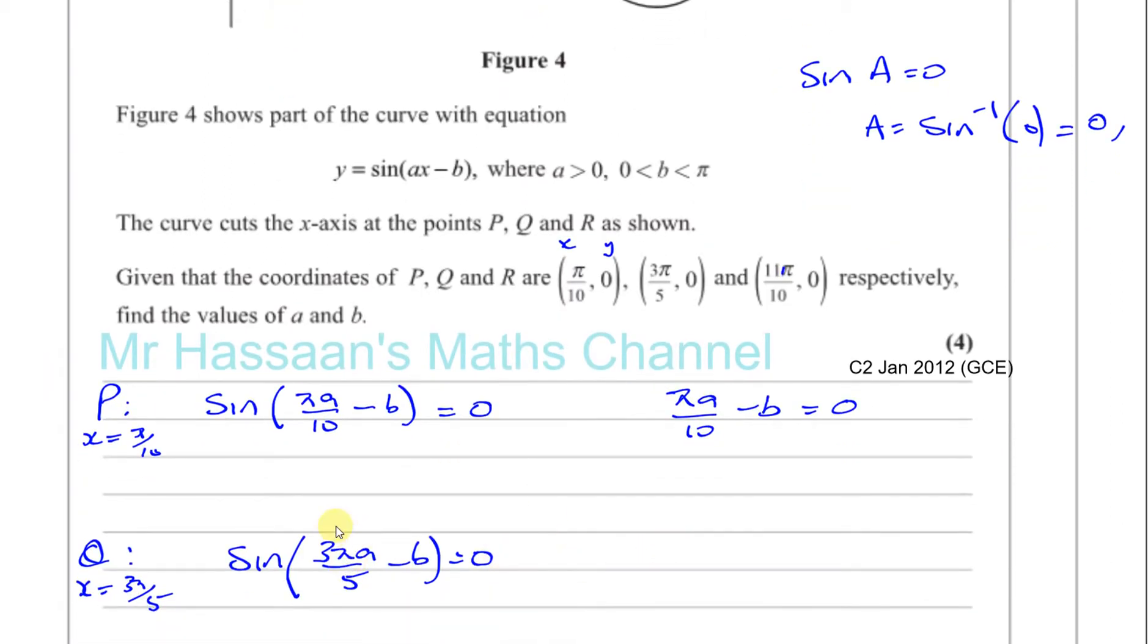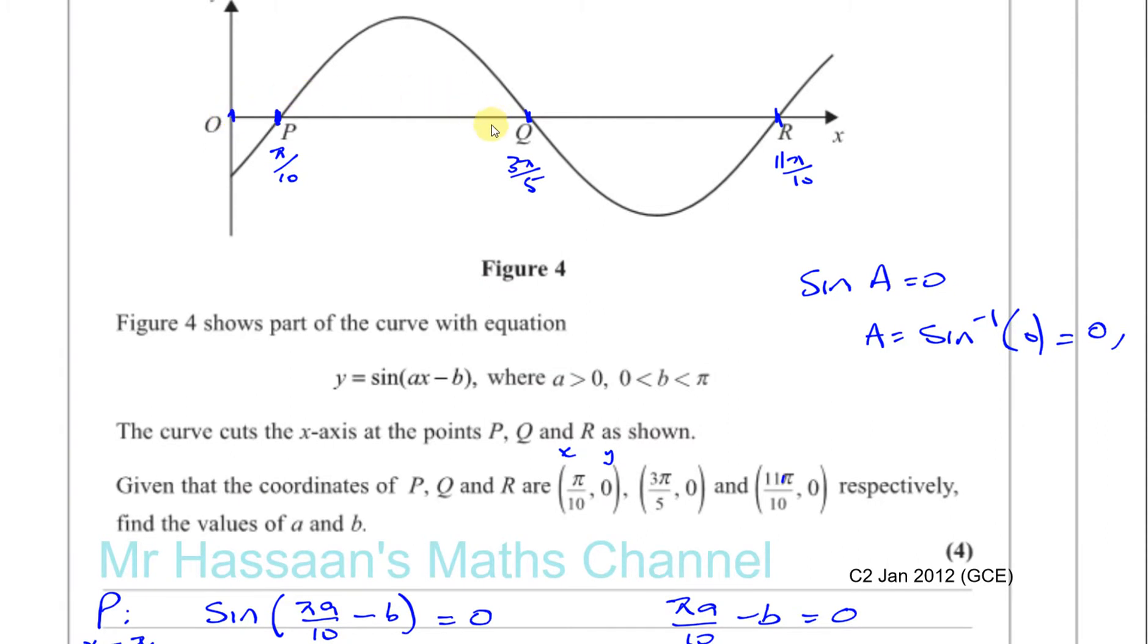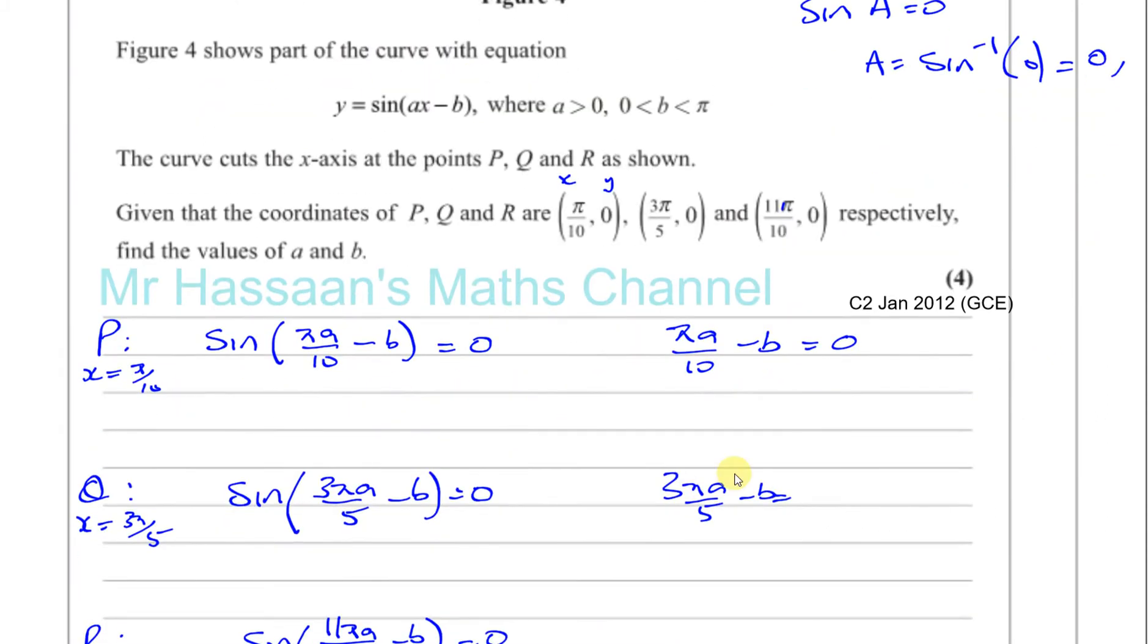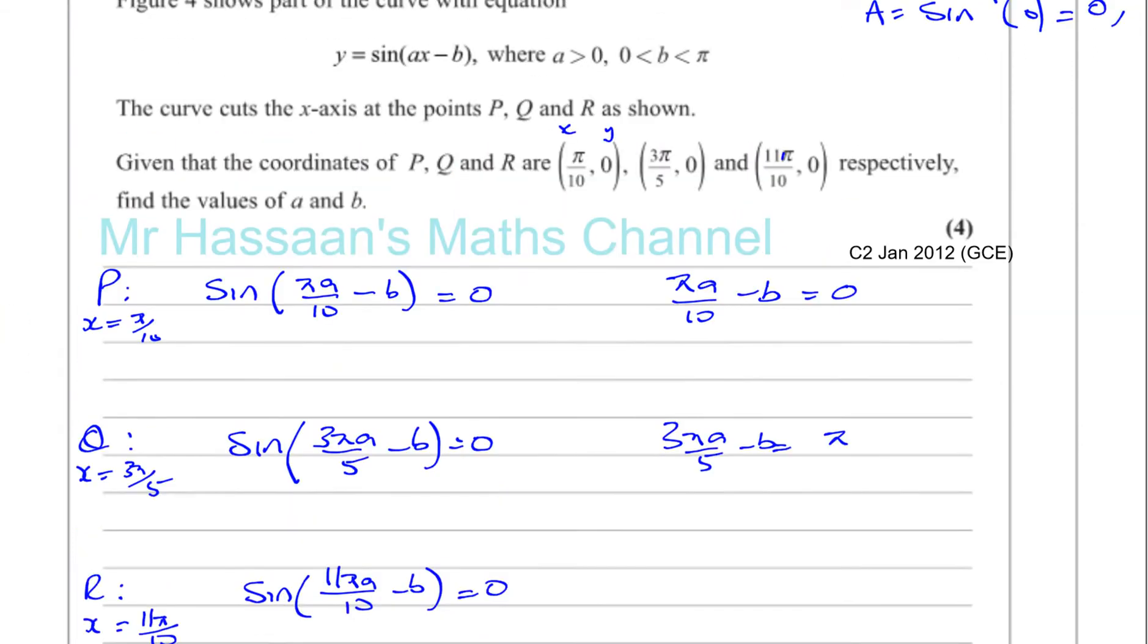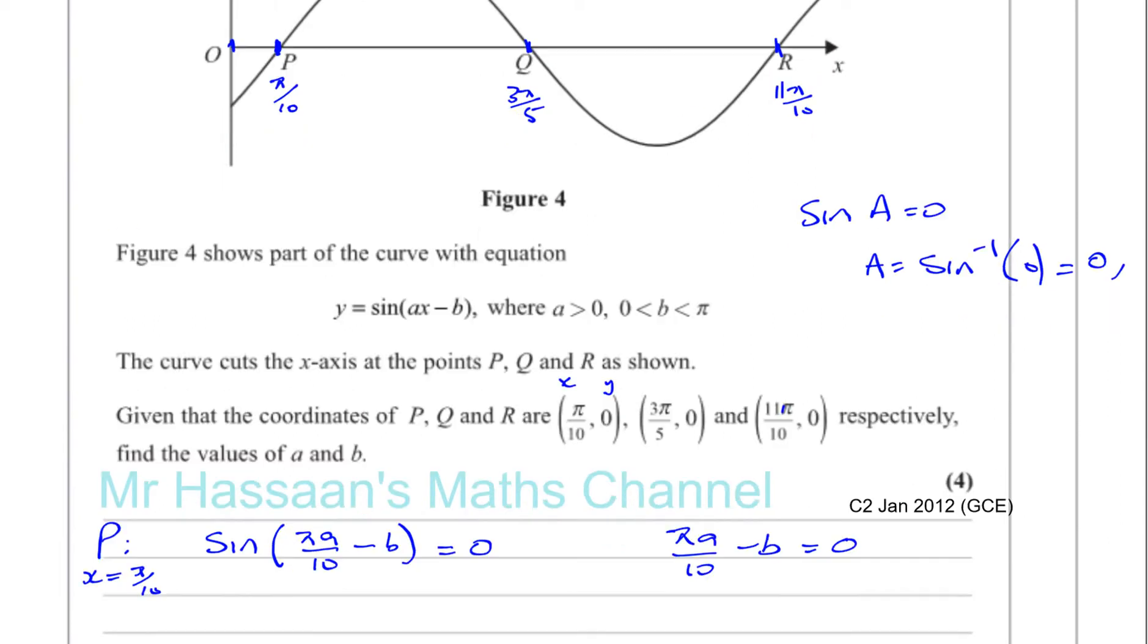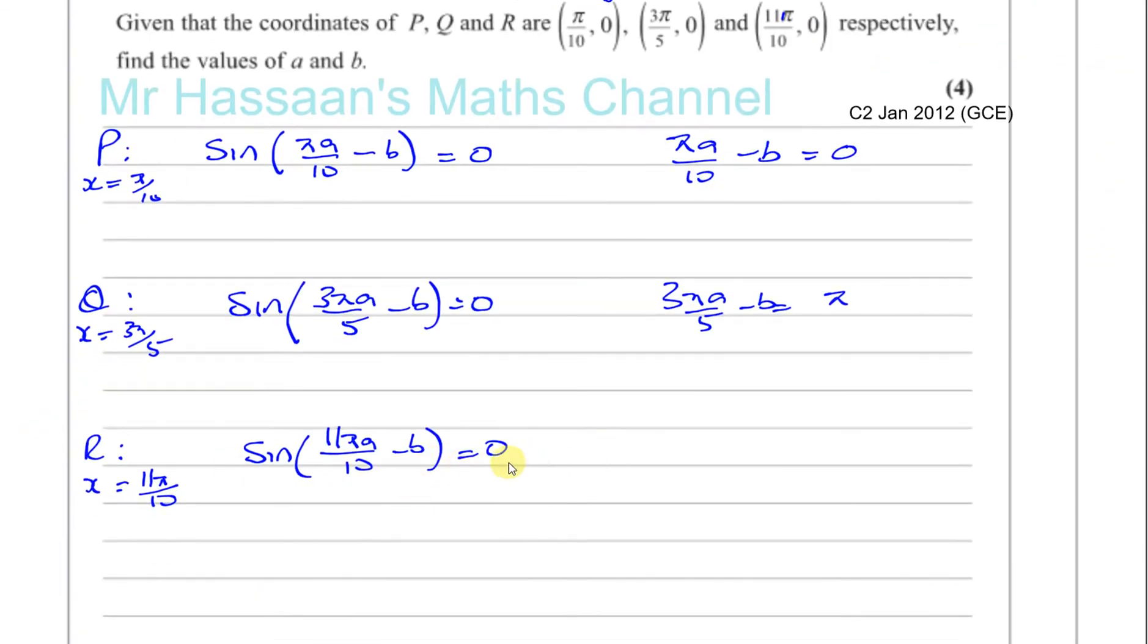That's going to be the value of that angle. Now the value of this angle, 3 pi A over 5 minus B, well, this is the next angle along. The next angle along where the sine curve hits 0 is going to be pi. So that must be pi. And then the next time it hits 0 is at 2 pi. That's how the sine curve goes. So sine of an angle equals 0 at 0, at pi, at 2 pi. And this is the one that's closest to 2 pi. So you've got 11 pi over 10. 11 pi A over 10 minus B is equal to 2 pi. So we have these three equations we could use to try to find what A and B are.